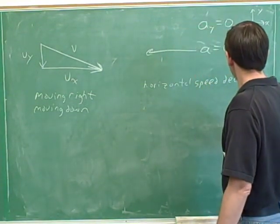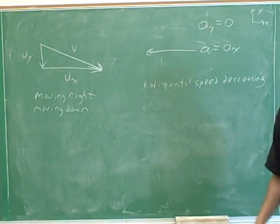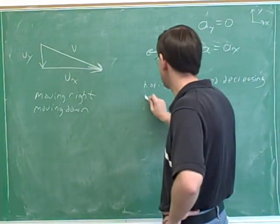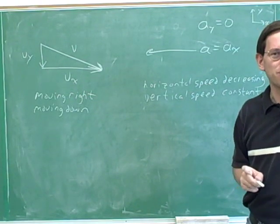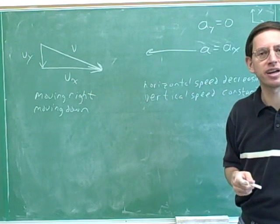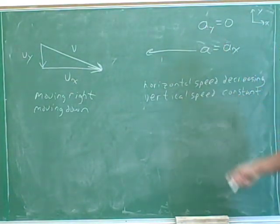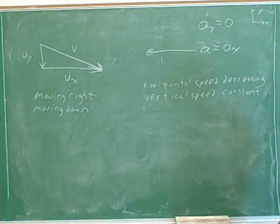Since a_x is pointing to the left and v_x is pointing to the right, horizontally the acceleration and velocity are anti-parallel, which means that our horizontal speed is decreasing. Vertically, we have no acceleration. No acceleration doesn't mean no motion — the acceleration just tells you how our speed is changing. The acceleration here is zero, so our vertical speed is not changing, meaning it's constant. Not changing is a synonym for constant. So here's everything we can figure out about this object: it is moving to the right with decreasing horizontal speed and moving down with constant vertical speed.